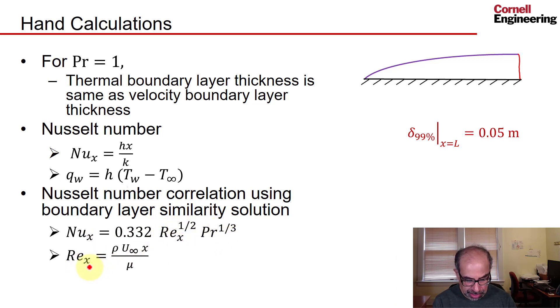This is the correlation with the Reynolds number and the Prandtl number. Here the Reynolds number, the length scale is based on x. So we can run the simulation at different Reynolds numbers and Prandtl numbers and check that the correlation we get, how well it matches this particular correlation.